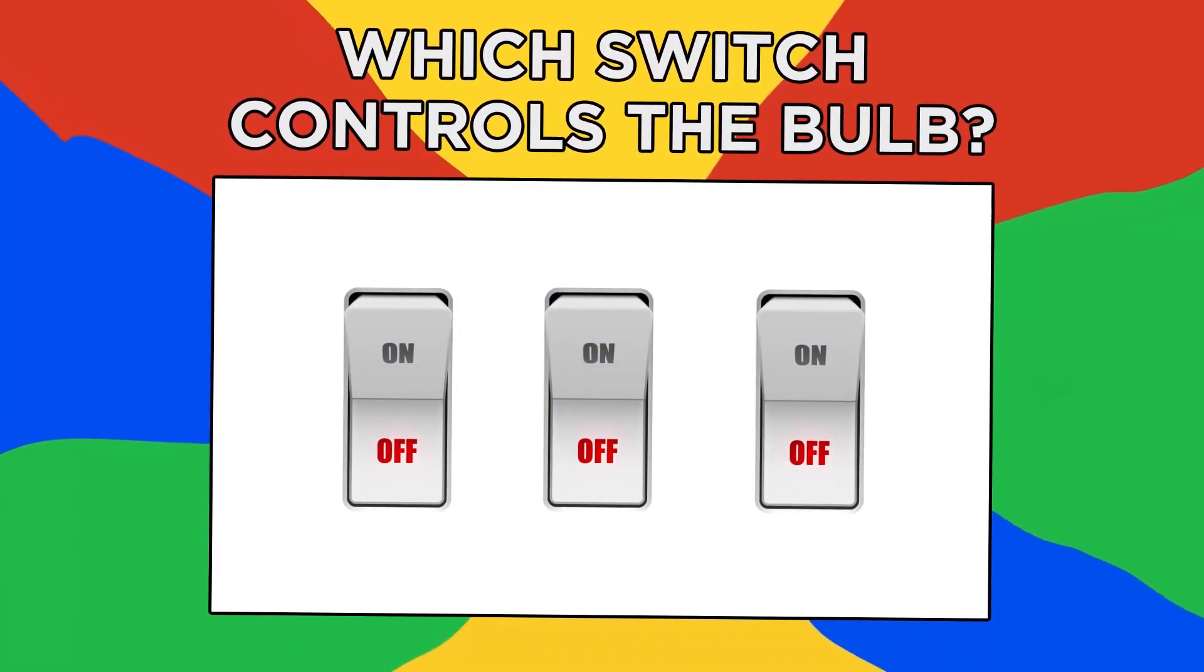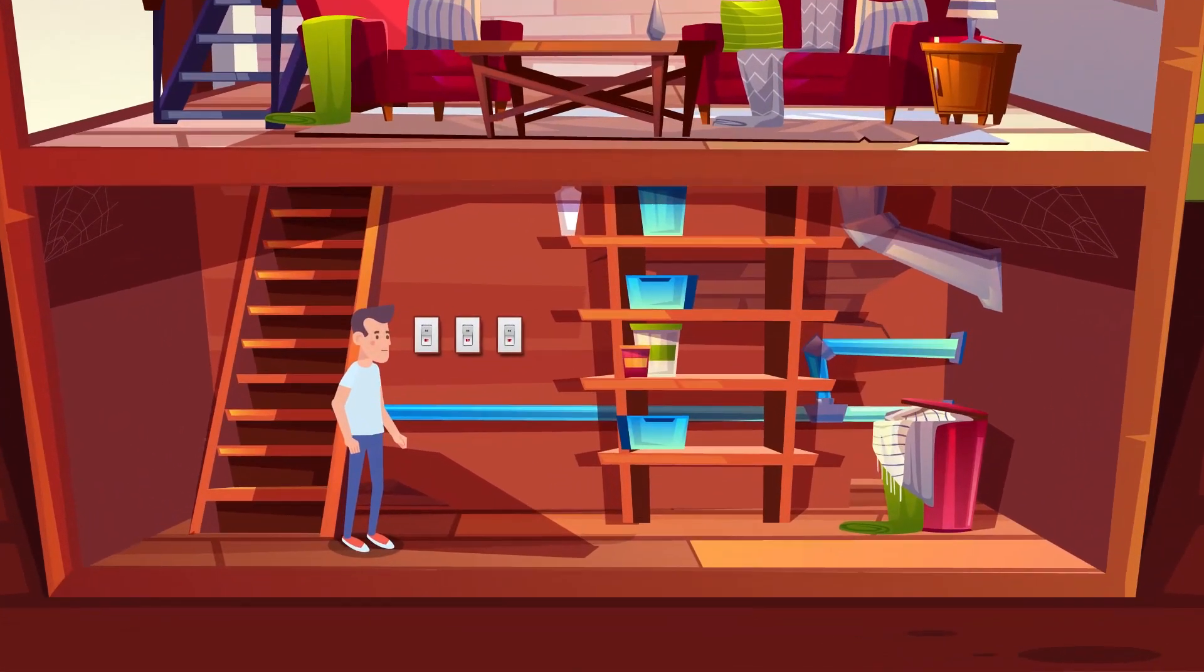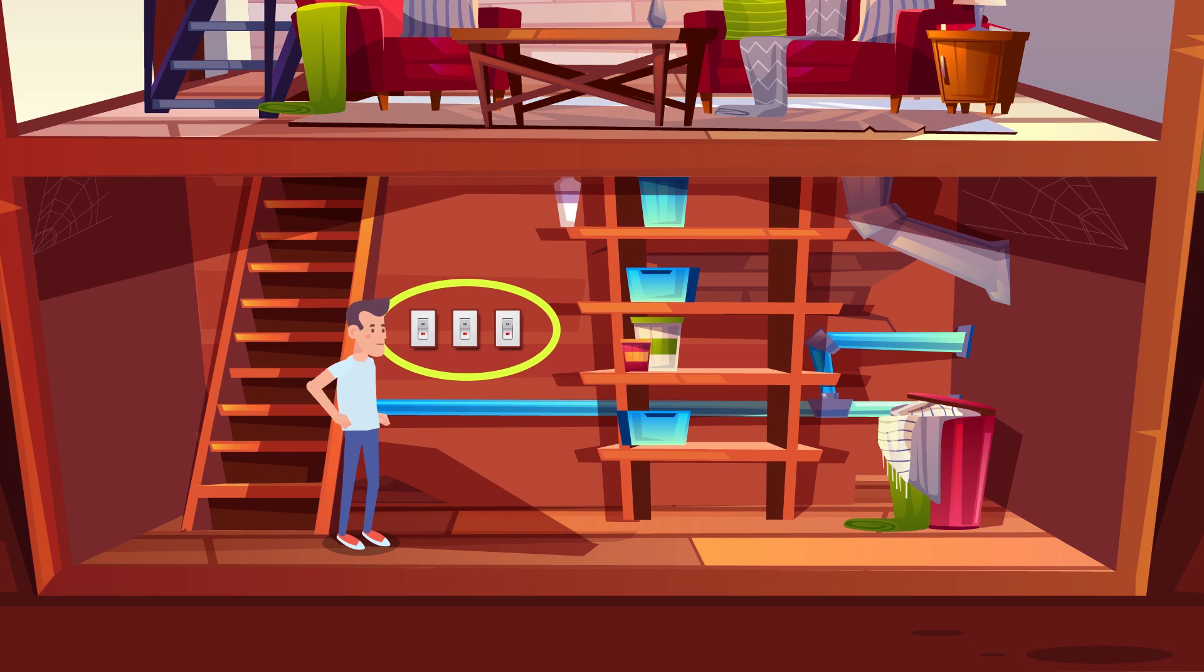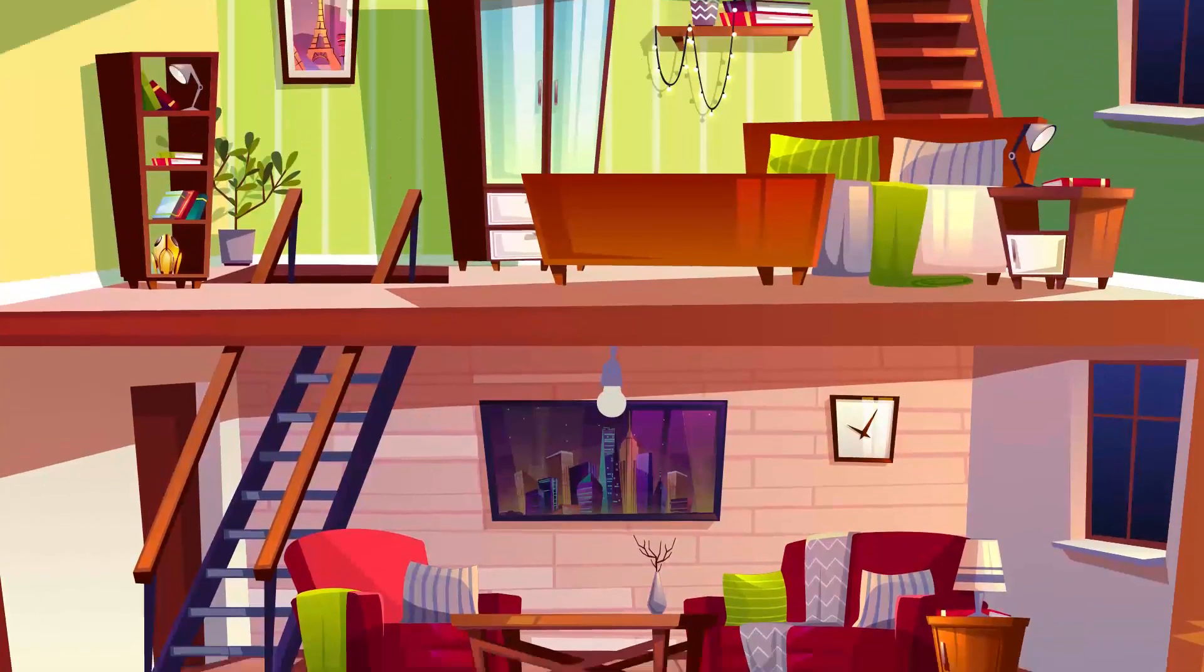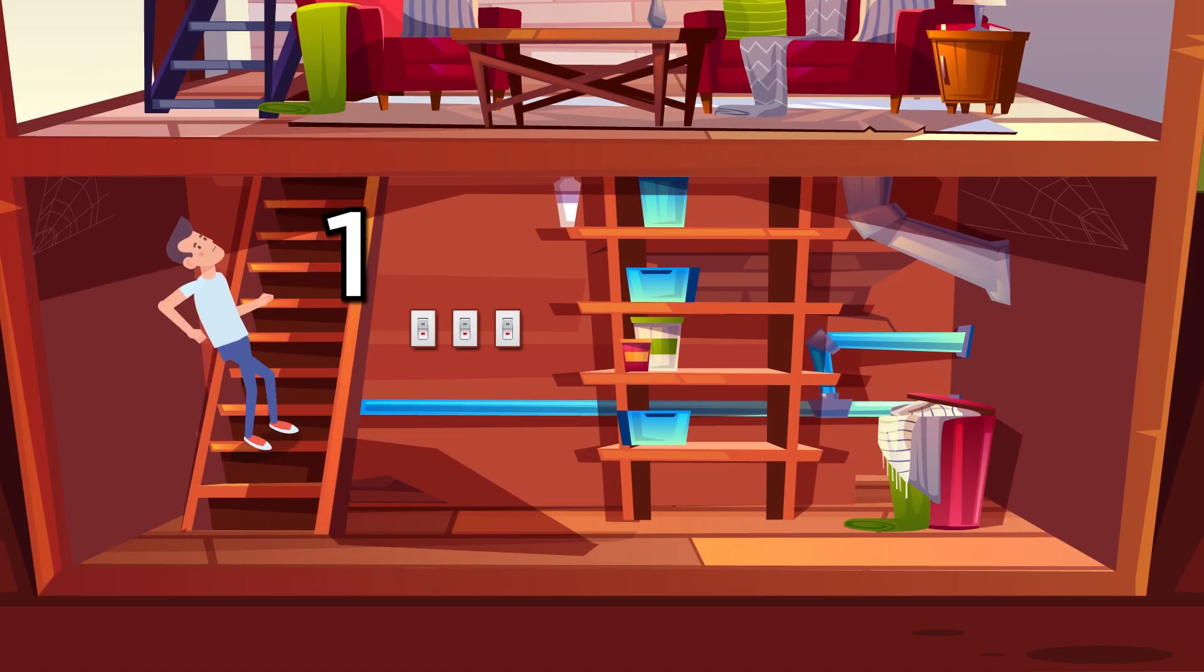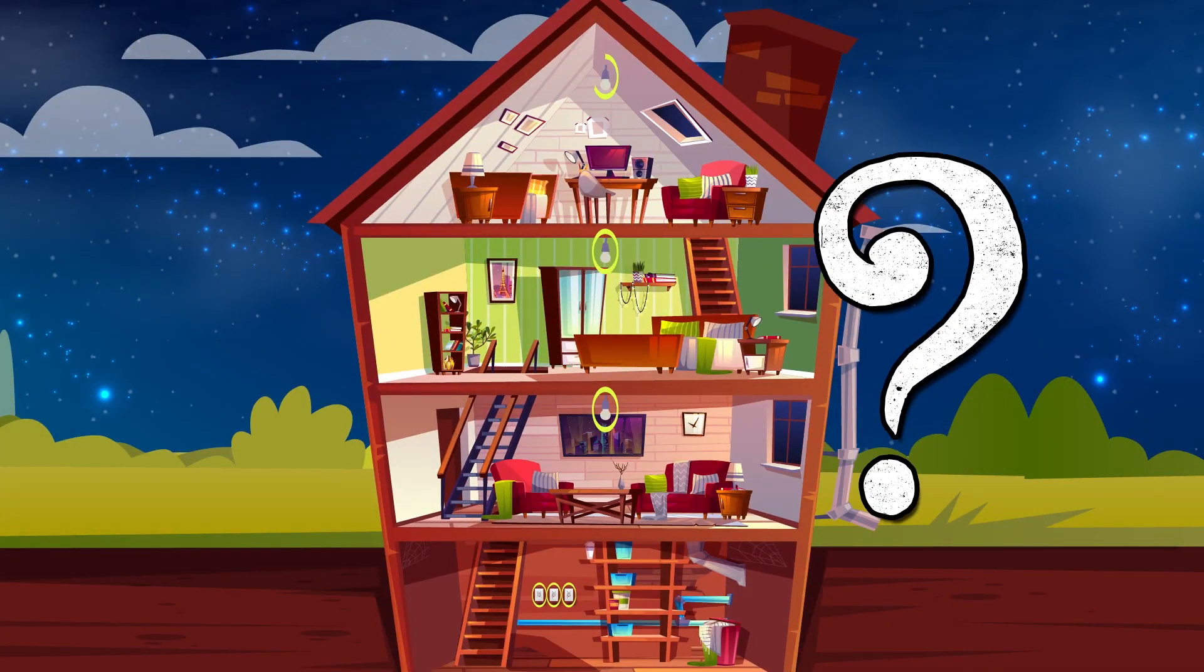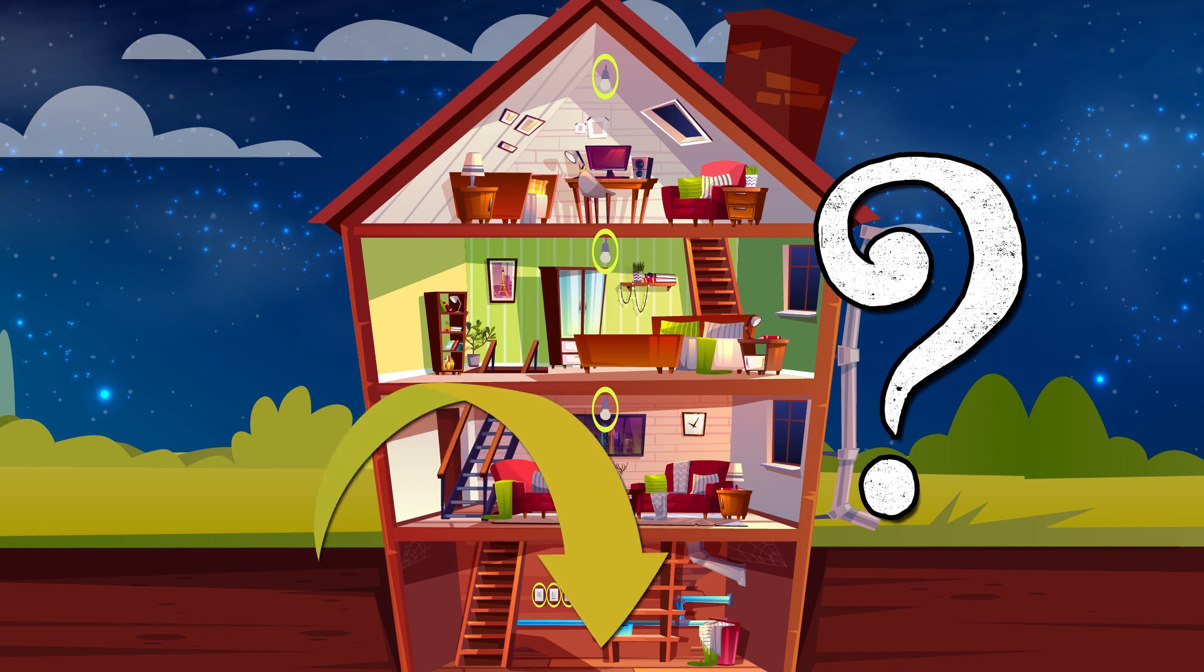Number four, which switch controls the bulb? Imagine yourself in a basement. You're looking at three light switches in the off position. Each one controls one of three filament light bulbs on the floor above. You're allowed to turn on any of the switches, but you can only go upstairs one time. How can you tell which switch controls which light bulb? Pause this video in three seconds if you want to figure out the answer yourself and share it with me in the comment section down below.